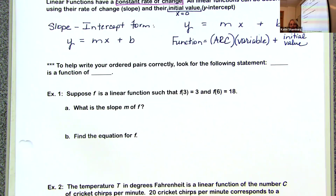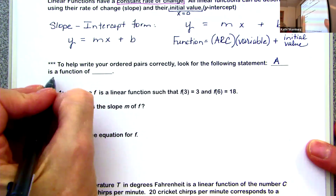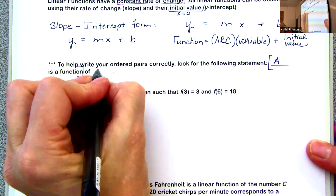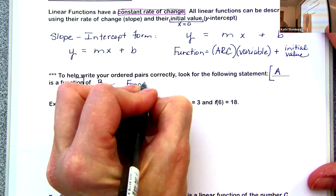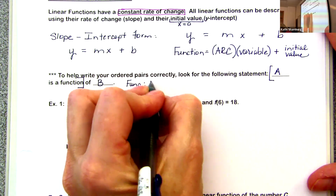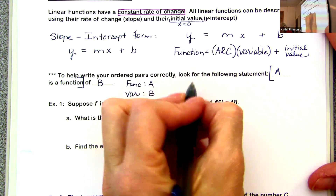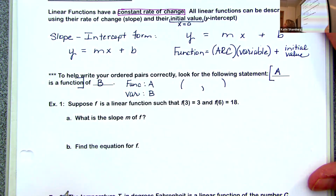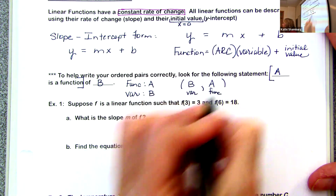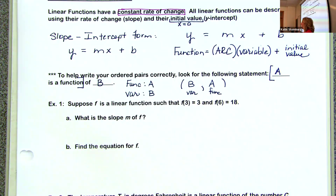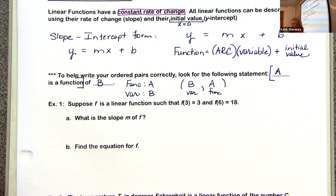To write ordered pairs correctly, look for the statement 'A is a function of B.' If A is the function, then B is the variable. In an ordered pair, variable always comes first. So the ordered pair is (B, A) — not (A, B) alphabetically. Be careful: it's always variable first, then function.